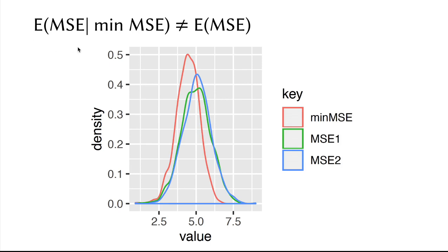The bottom line: the expected mean squared error, conditional we take the minimum of different mean squared errors of different models, is not the same as the expected mean squared error of that model. That is why we need the test set that is untouched by the validation process.